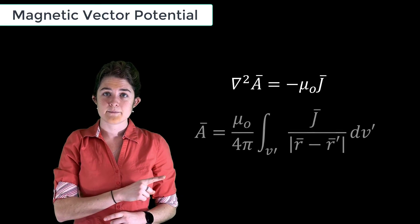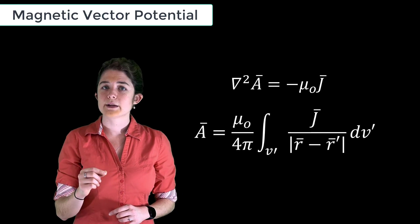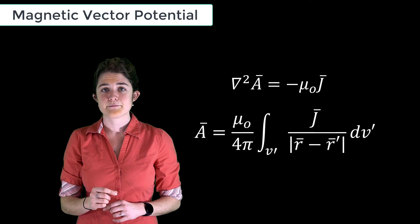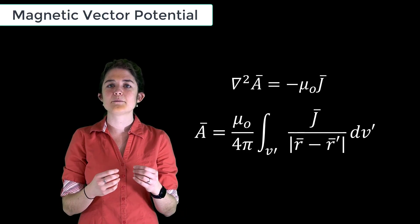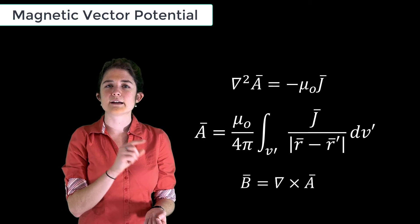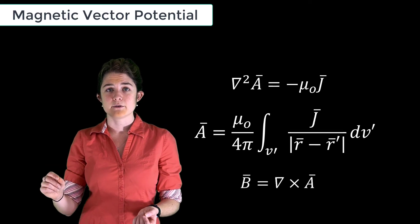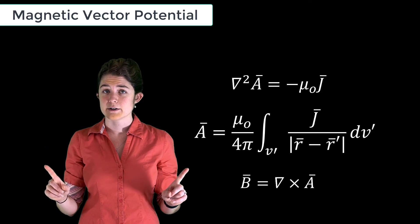A is equal to a simple integral of the current density. Again, this is pretty useless in itself, but remember A can be used to find B. So this equation gives us a way to find the magnetic field resulting from any arbitrary current source.